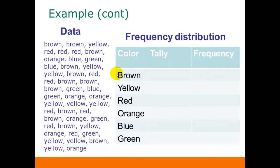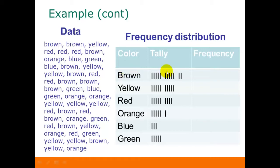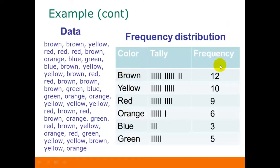So if we went through and did our tallies, that's what we would end up with. Now we can count the frequencies for each one: brown would have 12, yellow would have 10, red would have 9, orange 6, blue 3, and green 5. So our frequency distribution is the list of colors and the frequencies for each one.